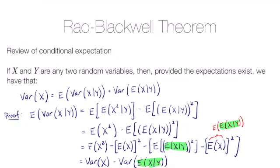Putting it all together, we've shown that the expectation of the variance of x given y equals the variance of x minus the variance of the expectation of x given y. Rearranging gives us the theorem.